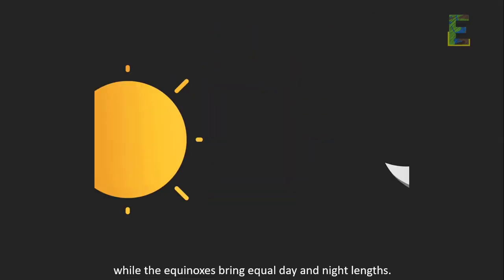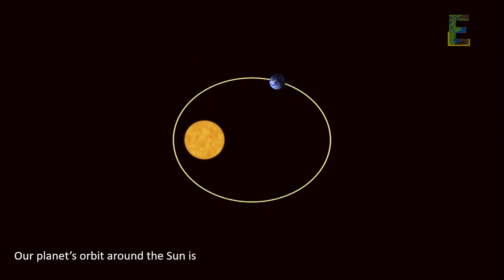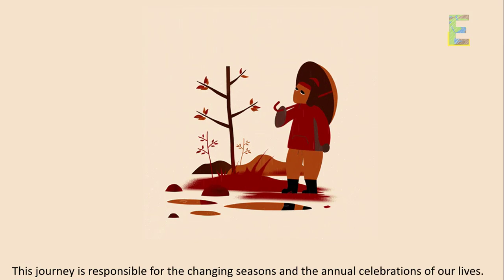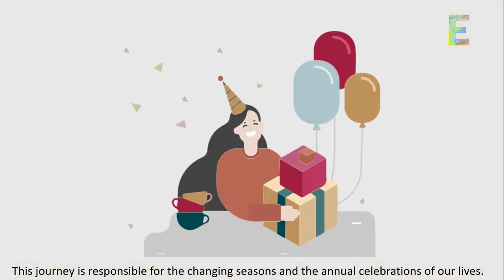While the equinoxes bring equal day and night lengths. Earth's orbit around the Sun is an elliptical path that takes approximately 365.25 days to complete, that's a year. This journey is responsible for the changing seasons and the annual celebrations of our lives.